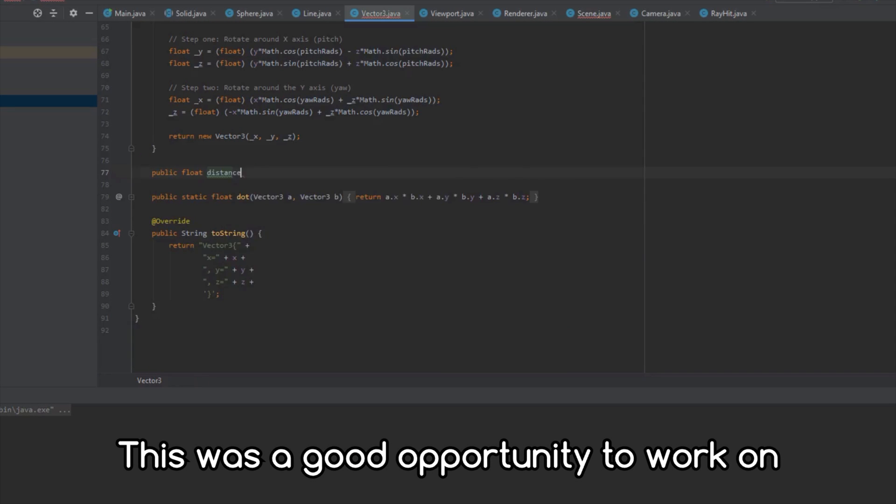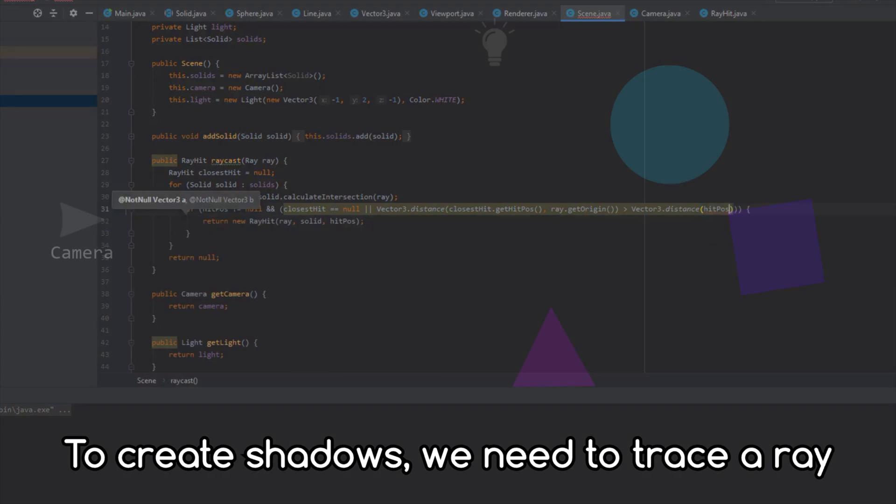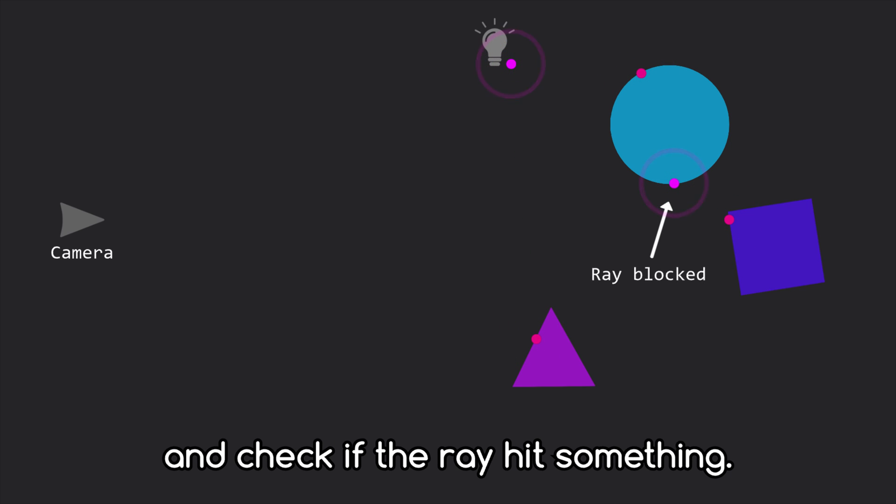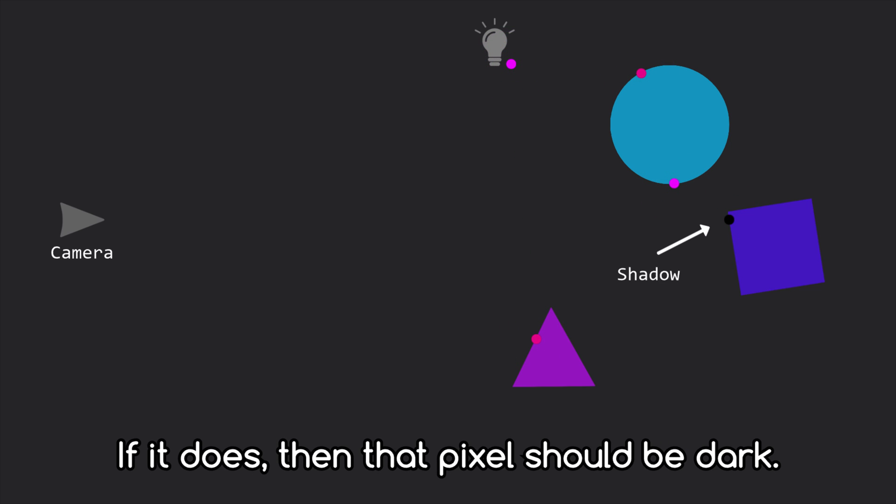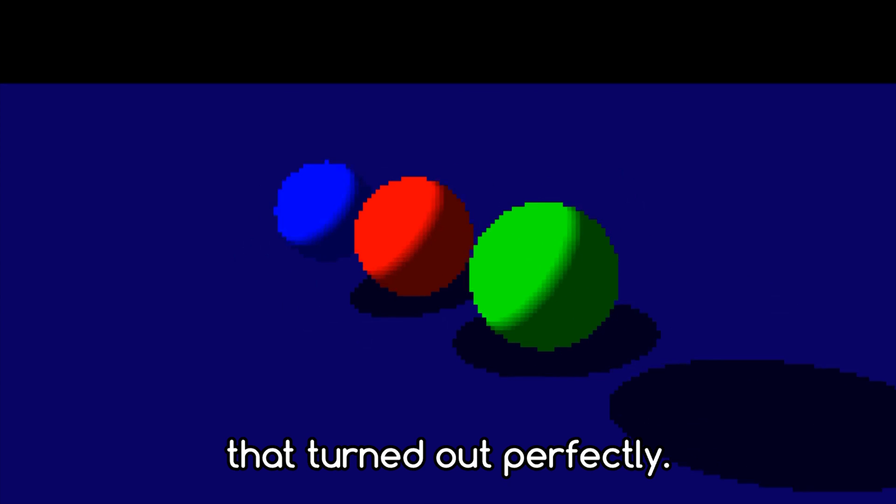This was a good opportunity to work on actual shadows, which adds more realism. To create shadows, we need to trace a ray from every intersection to the light and check if the ray hits something. If it does, then that pixel should be dark. As you can see, that turned out perfectly.